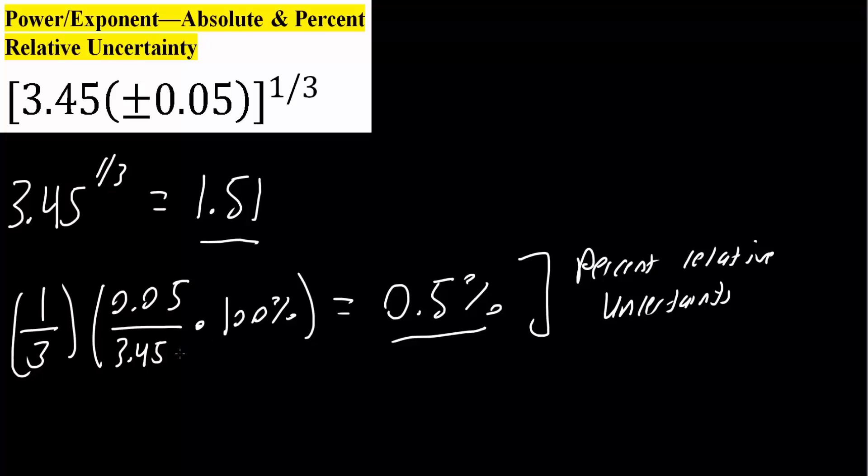Next, we will calculate the absolute uncertainty. So we take this number, 1.51, and multiply it by the percent relative uncertainty, which was 0.5, and then we divide by 100. We would get 0.0076, and so that's about 0.008. This is the absolute uncertainty.